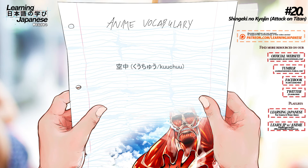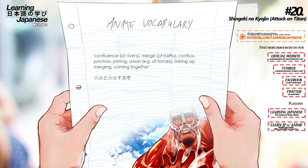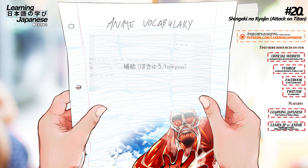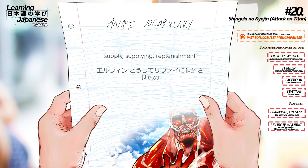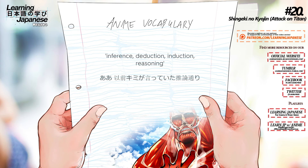空中 (kuju) — Sky, air. 合流 (gouryuu) — Confluence, merge, conflux, junction, joining, union, linking up, merging, coming together. 補給 (hokyu) — Supply, supplying, replenishment. 推論 (suidon) — Inference, deduction, induction, reasoning.